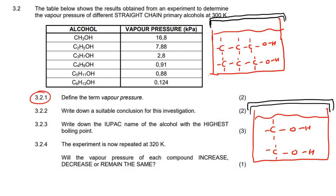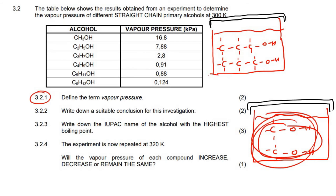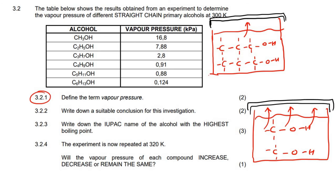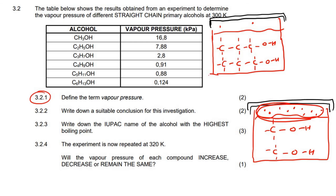The intermolecular forces in the longer chain container would be much stronger, so those molecules are holding on to each other much more, whereas the shorter chain ones aren't really holding on to each other that much. So which ones will be easier to separate when we start applying heat? The shorter chain ones are going to separate more easily. You're going to get more of those going into the gas phase earlier on. So at equilibrium, the shorter chain container is going to have a lot more gas, because the molecules are easier to separate, whereas the longer chain container will have less.